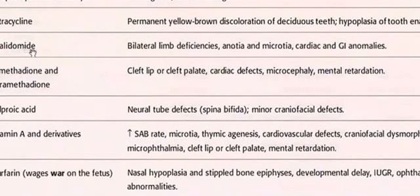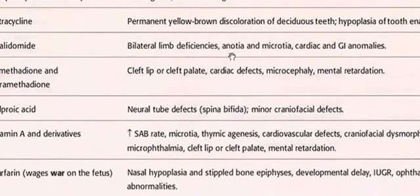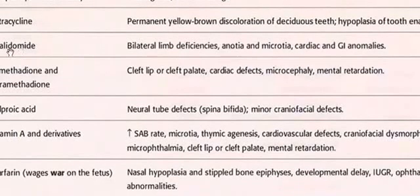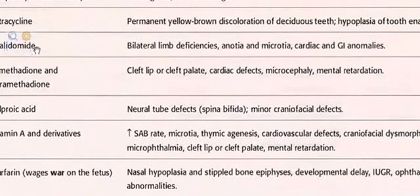Thalidomide: bilateral limb deficiencies, ear anomalies (anotia, microtia), cardiac and GI anomalies. A helpful mnemonic: 'limb-idomide' — thalidomide makes limb deficiencies bilateral.